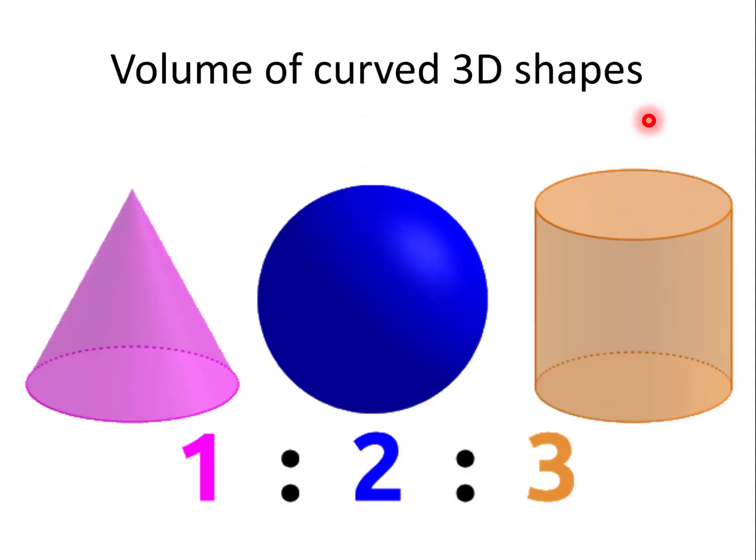For curved 3D shapes with the same radius, the ratio of the volume is 1 to 2 to 3 for cone to sphere to cylinder.